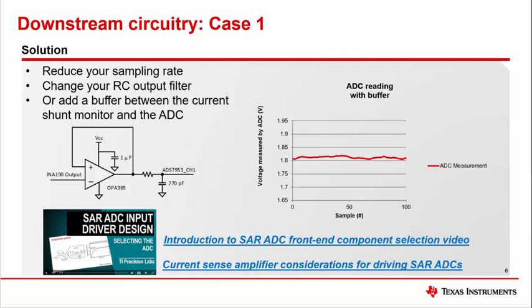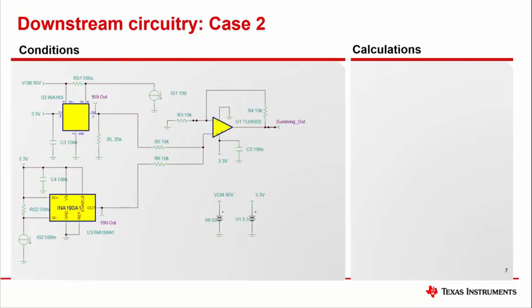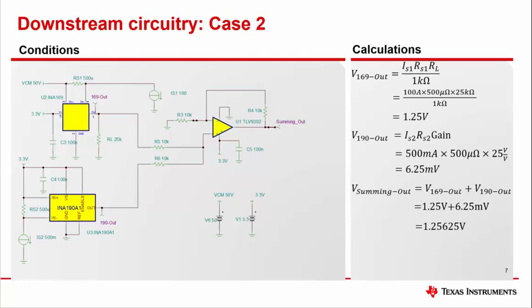So it's possible you may want to measure the current in multiple locations and sum the values together. Perhaps due to price, common mode, or solution size you may use different current monitors for different parts of your system. In this particular instance we have an INA169 from the high side measurement for a common mode that falls outside of the INA190 absolute max range. To sum the INA169 and INA190 measurements together we decide to use a non-inverting summing amplifier topology. According to our calculations we expect to see about 1.256 volts on the TLV9302 output with the majority of this value coming from the INA169 measurement. However, after simulating we get something less than ideal. Could this just be an artifact of a bad simulation model? No.